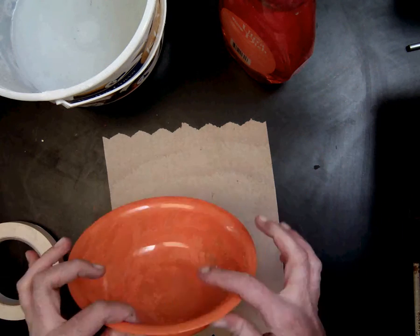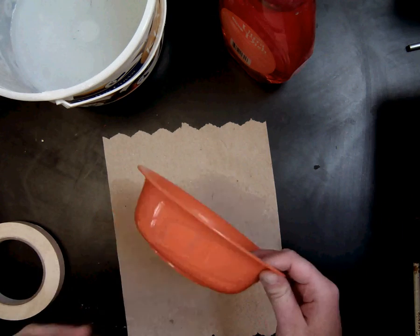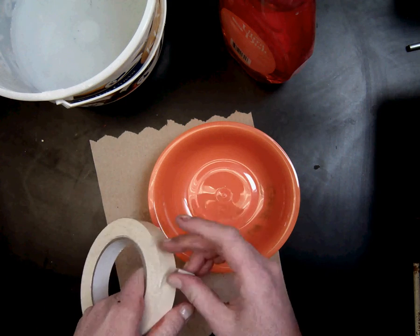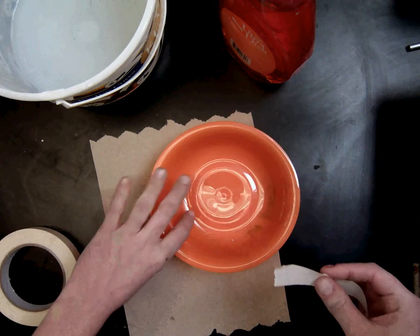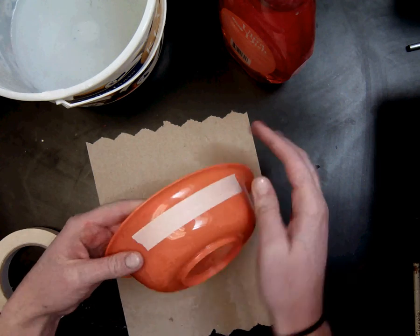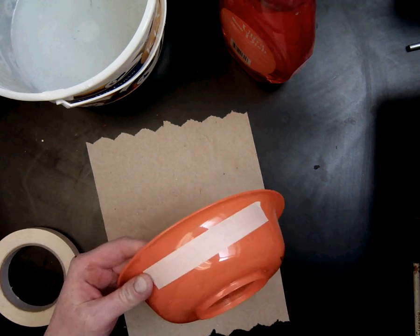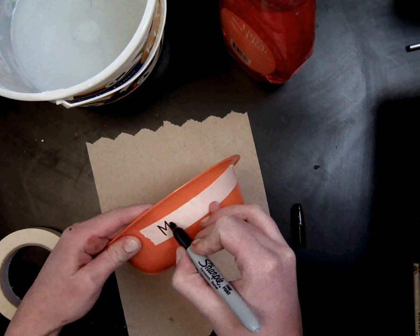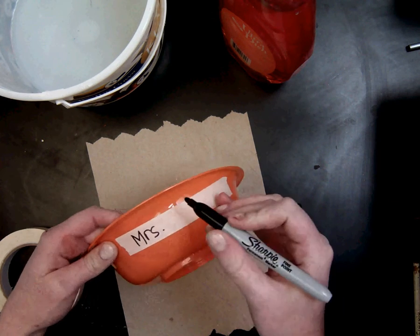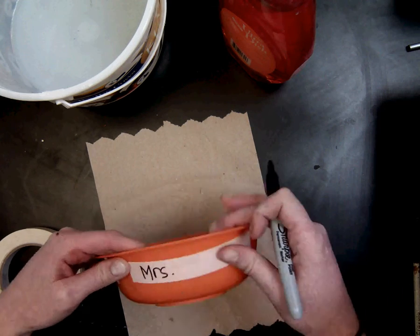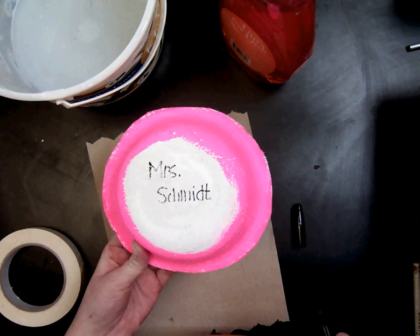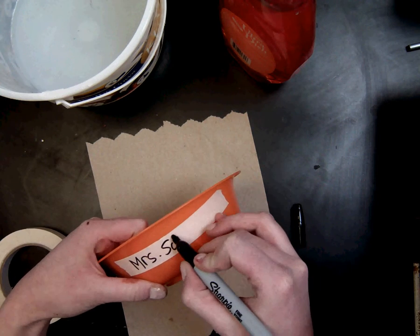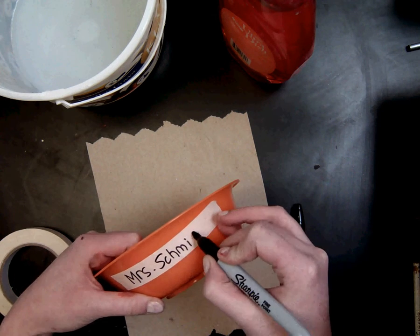The first thing we need to do is label the bowl so we know whose is whose. At your table you're going to get a piece of tape, rip it off, put it on the side, make sure it's on there. And then you're going to write your name on the tape so that I can rewrite your name on the bottom of your bowl when it's dry. It's very important that you write your name on this piece of tape, otherwise we're going to have no idea whose is whose.